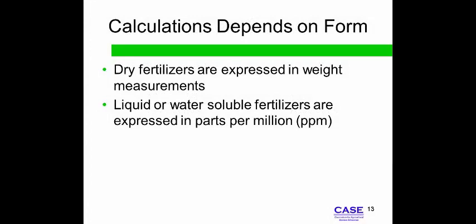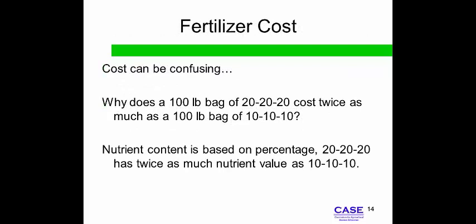Dry fertilizers are measured by weight — ounces and pounds — while liquid fertilizers are often measured in parts per million. The parts per million formula is given during activity 6.1.3, Fertilizer Figures. Plant growers must remember to calculate the economic value of a fertilizer to maximize profits. The nutrient content will affect the price of a fertilizer. A more concentrated fertilizer will usually cost more because of the higher nutrient value. You will compare various fertilizers according to nutrient value and price to determine the most efficient fertilizer.